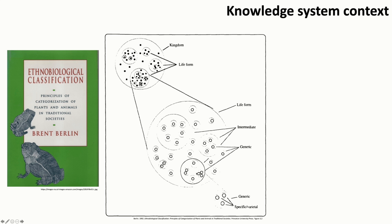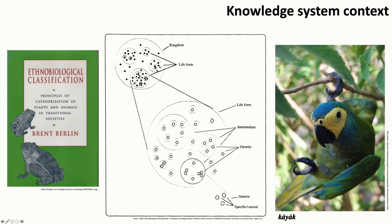Sometimes the mapping doesn't align, where we have four biological species mapping on to seven folk species. Regarding how organisms are named, he writes that names often allude to organisms' forms, behavior, or ecological features.